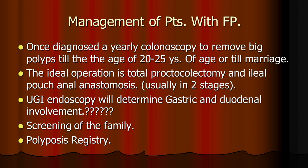Upper gastrointestinal endoscopy should be performed to determine gastric and duodenal involvement, since in certain polyposis syndromes there are polyps in the stomach, duodenum, and small intestine — particularly common in Peutz-Jeghers syndrome. Screening of the family should be done, and a polyposis registry should include all information about families with familial polyposis to plan treatment for all members of the family.